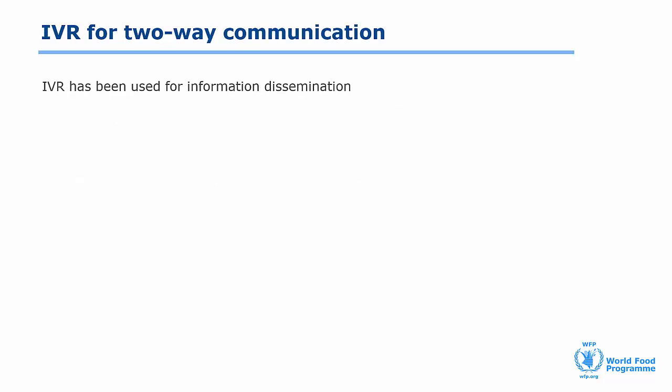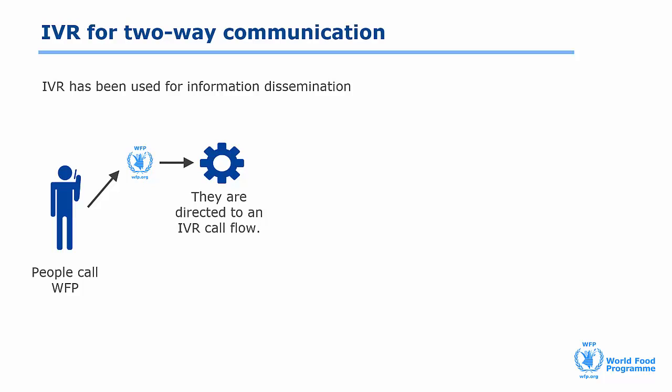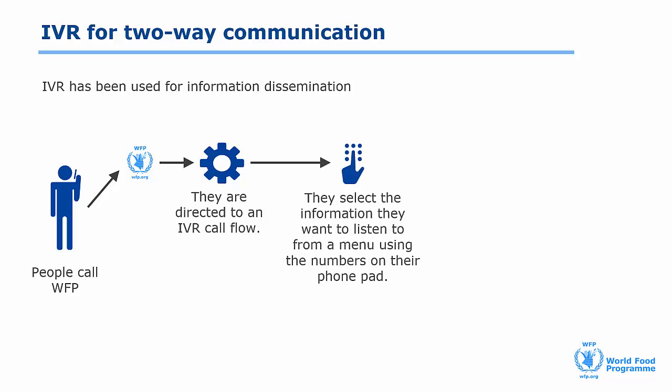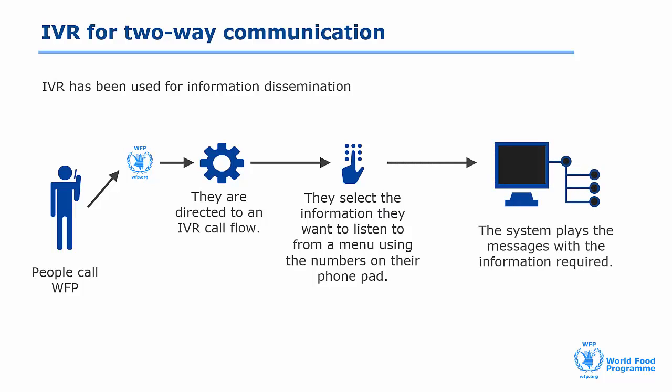At WFP, IVR is mainly used to disseminate information through a two-way communication system, rather than to gather information from respondents. Through the two-way communication system, people can also contact WFP. Callers are redirected to an IVR call flow with a menu of information; they can select what they want to listen to using the numbers on their keypad, and the system then plays back the messages they've selected. We'll talk more about the two-way communication system later on in the course.